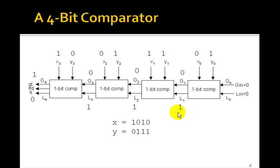So let's see how it works. Suppose you want to compare an x of 1, 0, 1, 0, that is 10, to y of 7. Well, x is greater than y, so we're going to end up with g greater out here is going to be 1. So let's see how it works.